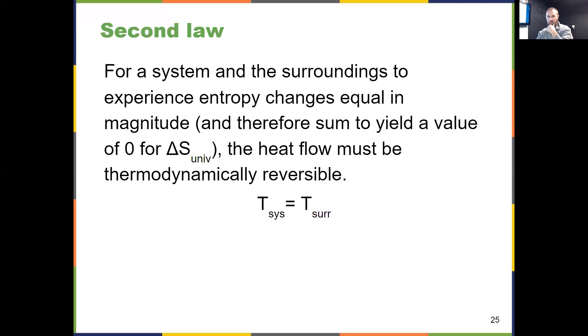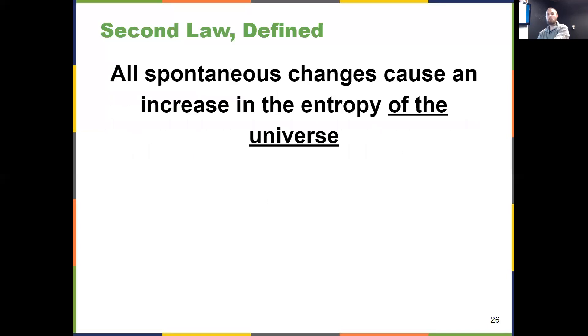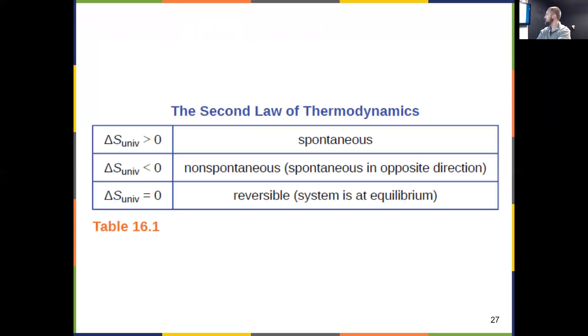Taking all that information together gives us a better predictor. The hard and fast rule, the second law of thermodynamics, tells us that every spontaneous process causes an increase in the entropy of the universe. That's summarized in table 16.1: ΔS_univ > 0 means spontaneous, ΔS_univ < 0 means non-spontaneous.